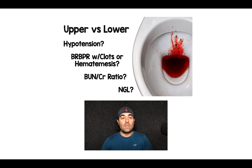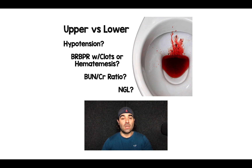These include: does the patient have hypotension? Is there bright red blood per rectum with clots? Or does the patient have hematemesis? BUN to creatinine ratio, which we'll talk about, and then NG lavage.